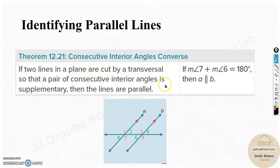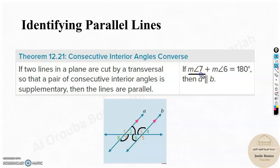Similarly, we have the consecutive interior angle theorem. Interior angles are the angles inside — such as angles 2 and 3, or 7 and 6 — and they are always supplementary. That is what we had learned before. So now, if the measures of two consecutive interior angles sum to 180 degrees, or are supplementary, then these two lines are parallel.